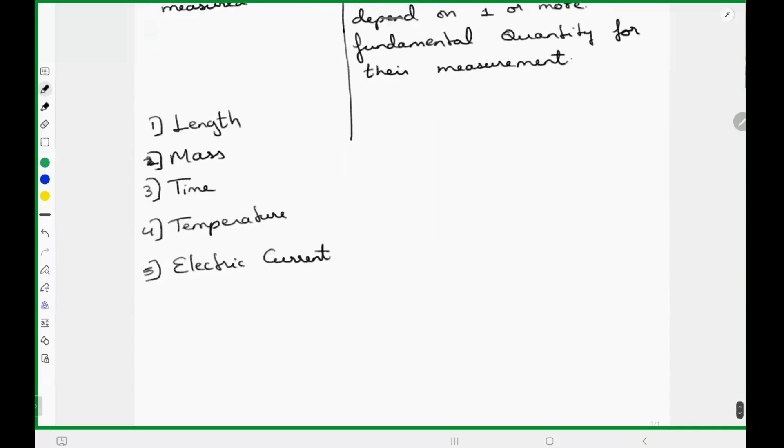Length, mass, time, temperature, electric current, then. Is my voice clear? Electric current, then you have luminous intensity, and then you have, last one, amount of substance. So amount of substance you basically have in chemistry in terms of mole. Moles, yeah, Avogadro's numbers, moles, right. So length, mass, time, temperature, electric current, luminous intensity, these are the only physical quantities which can be directly measured.